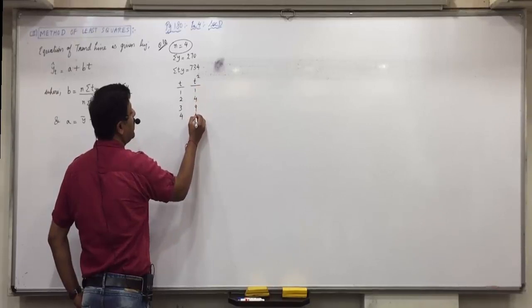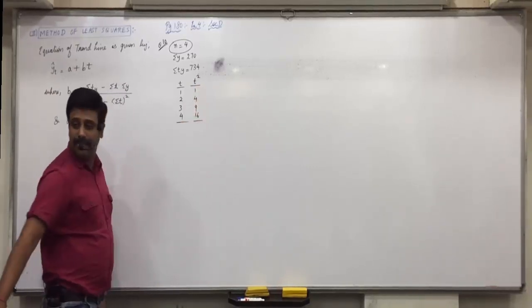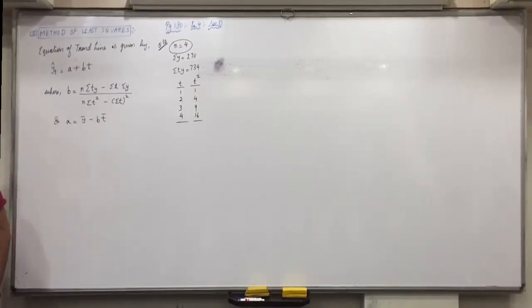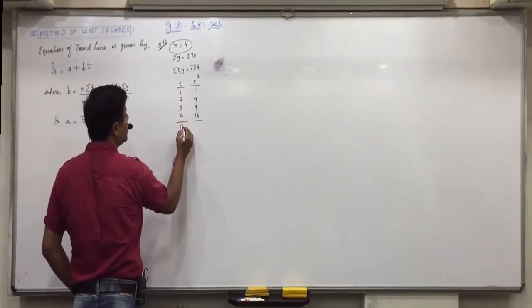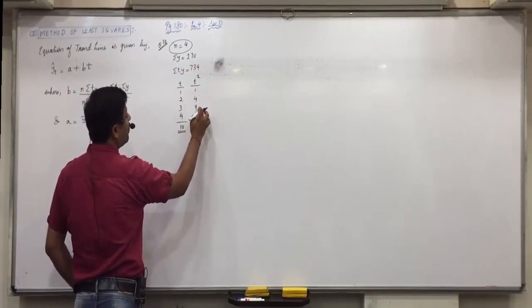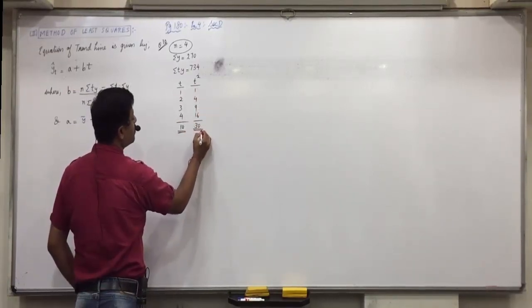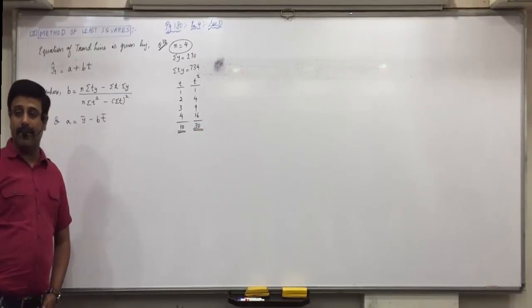So, 1, 4, 9 and... Did everyone understand this? Raise your hand who did not understand this t and t squared. So, 1, 3, 6, 10 and 1, 5, 14, 30. Is everyone clear with this? Yes.